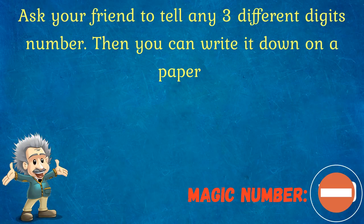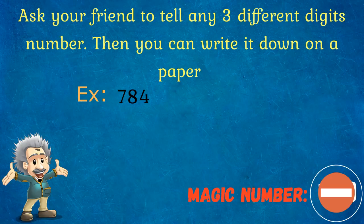As the initial step, ask your friend to tell any three different digits number. Then you can write it down on a paper. For an example, consider 784.